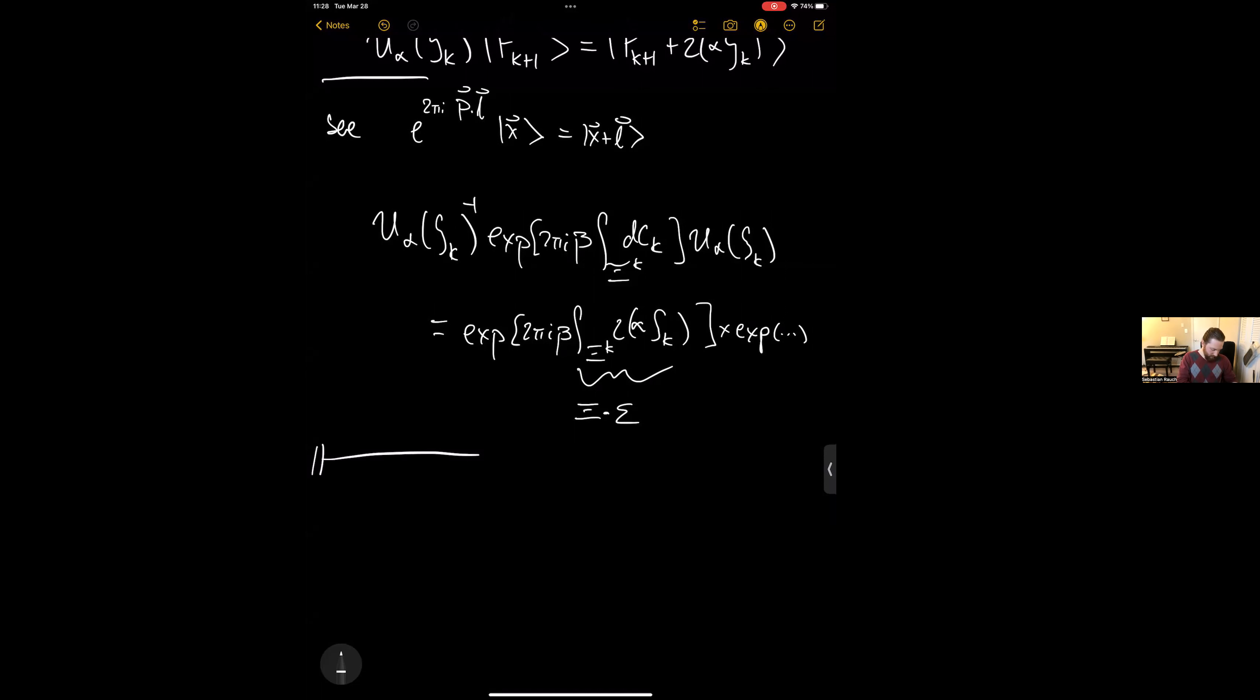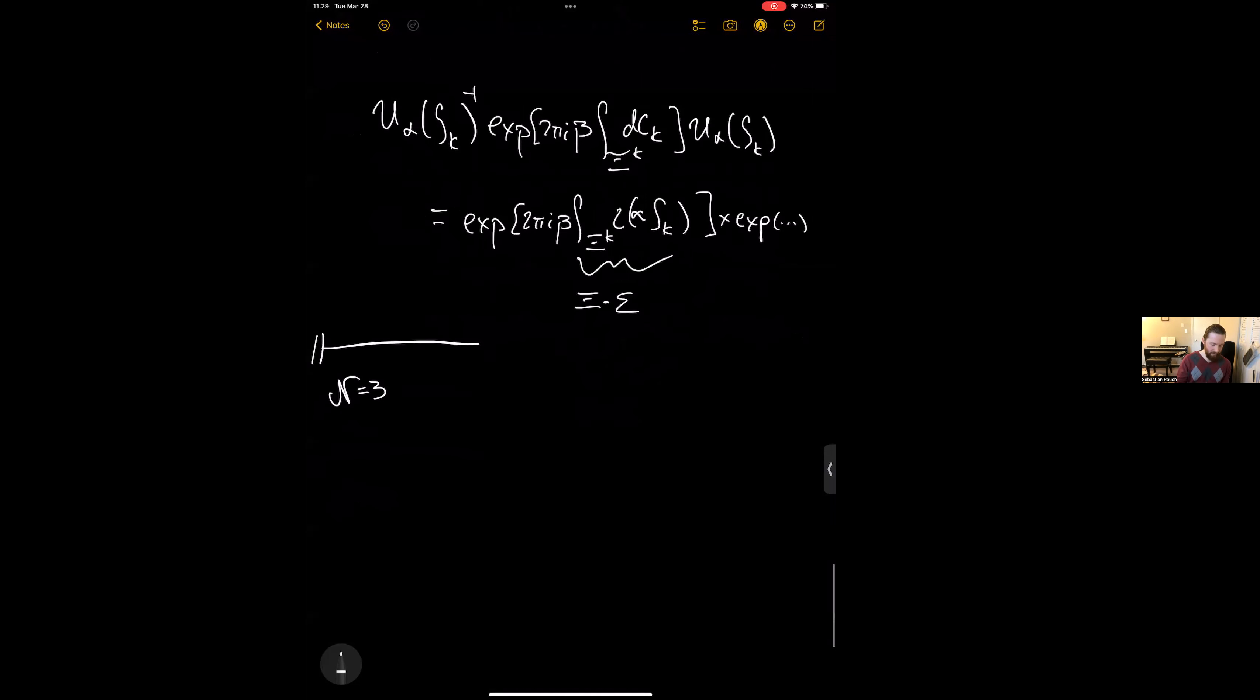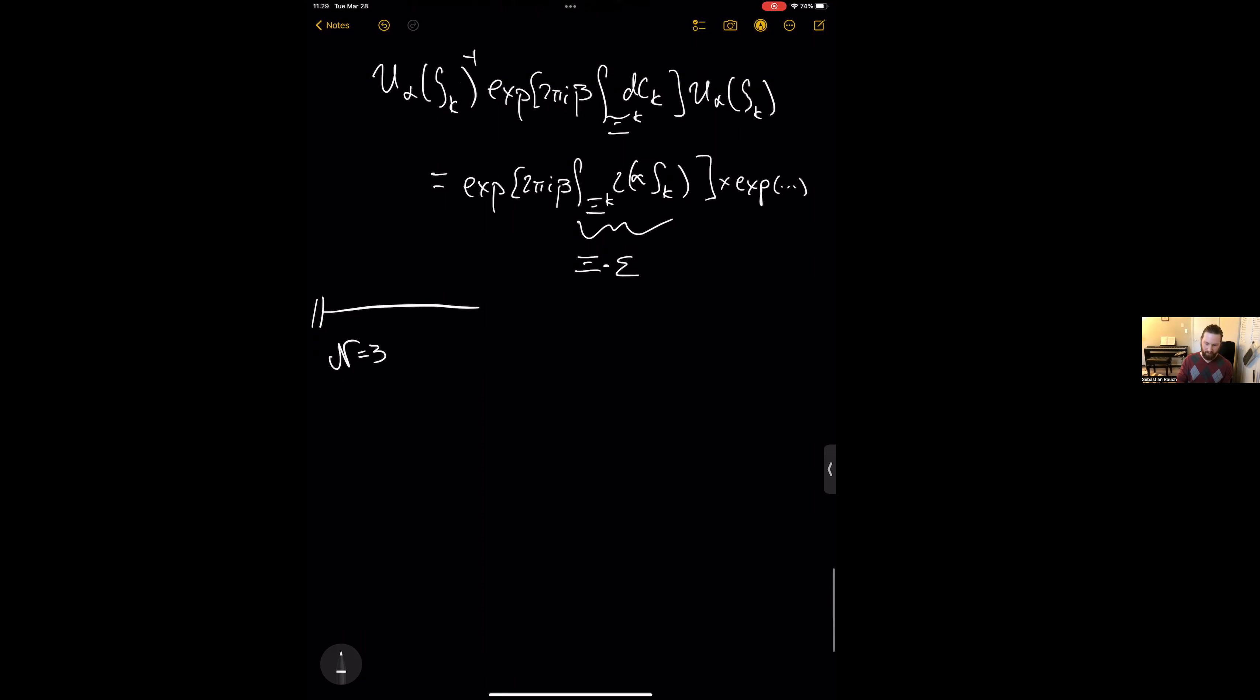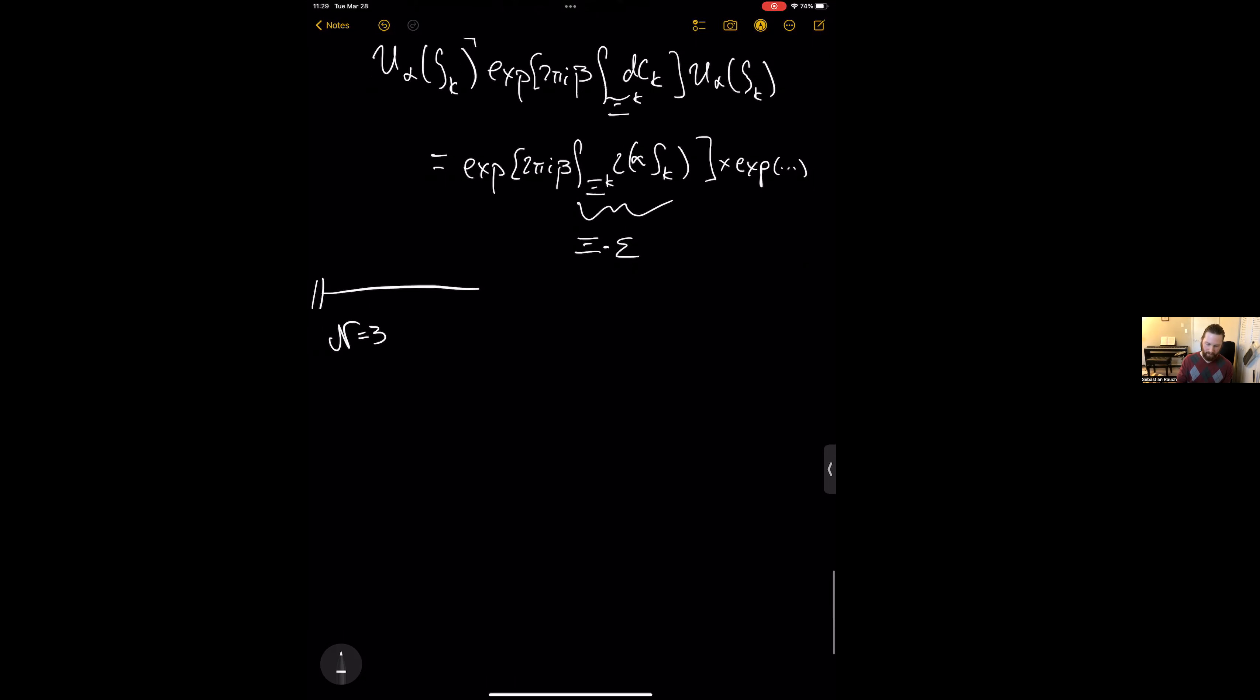So passing to the more exciting results in N equals three. Now the classifications are happening not in regular cohomology but cohomology with this SL2Z module coefficients to keep track of how everything's transforming. And what you end up finding is that everything is controlled by this operator CK, or sorry, this module CK.